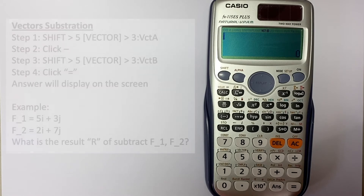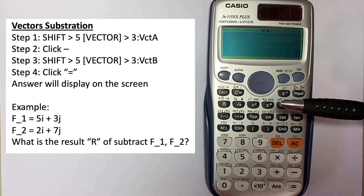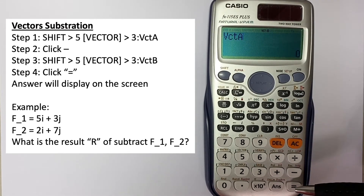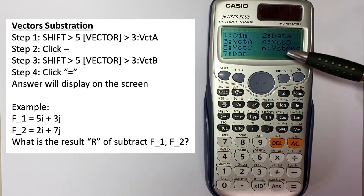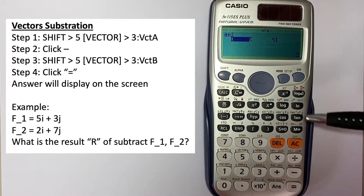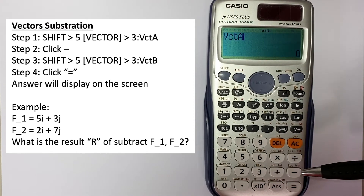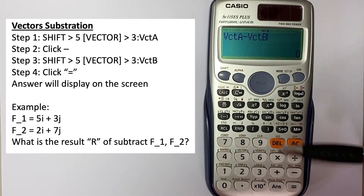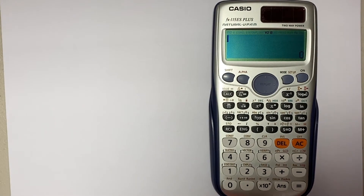For subtracting two vectors, we can use the same stored vectors. Check that vector A is 5 and 3, and vector B is 2 and 7. To subtract, go to Shift and find the vector menu, select number 3 for vector A, press minus, then go back and select vector B. Vector A minus vector B gives you the result of the subtraction.